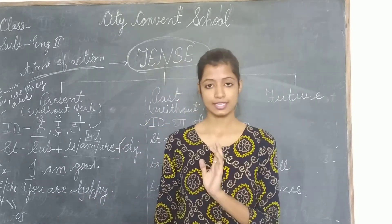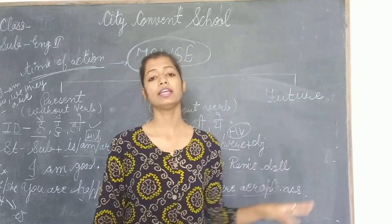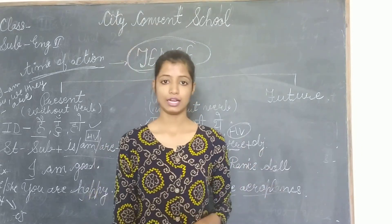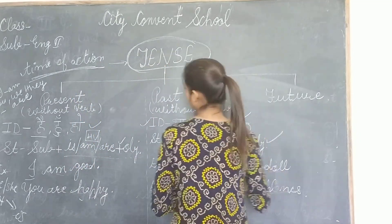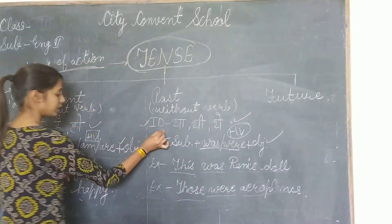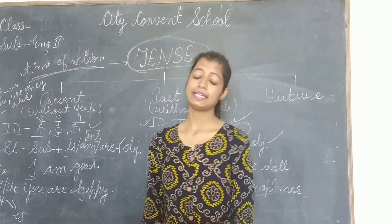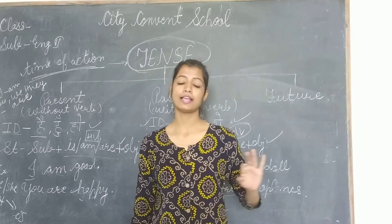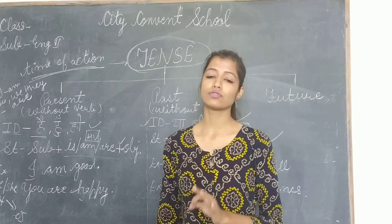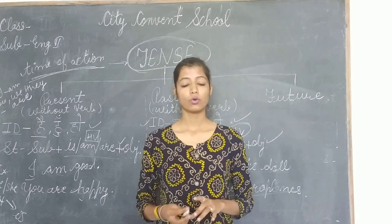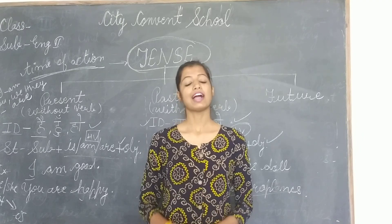Past tense mein he, she, it, this ke saath 'was' lagega, aur you, we, they, those, these ke saath 'were' lagega. Bas aapko structure pe dhyan rakhna hai — agar aapko structure yaad ho gaya, toh sentence banane mein koi bhi problem nahi aayegi. Is/am/are aur was/were ka translation bhi aayega. Okay students, I hope you understood it carefully. Thank you, have a good day.